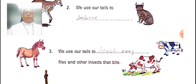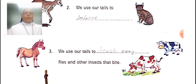The third example: horse and cow. We use our tails to brush away flies and other insects that bite. When these insects bite them, they will brush them away with their tails.